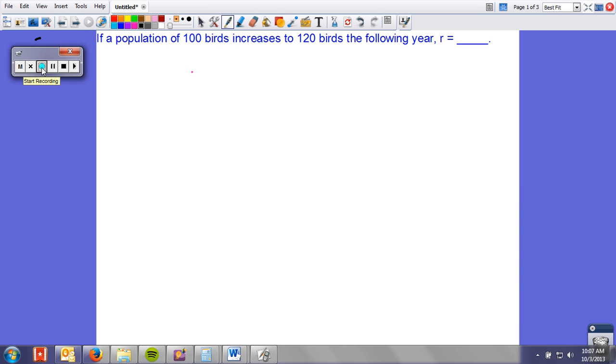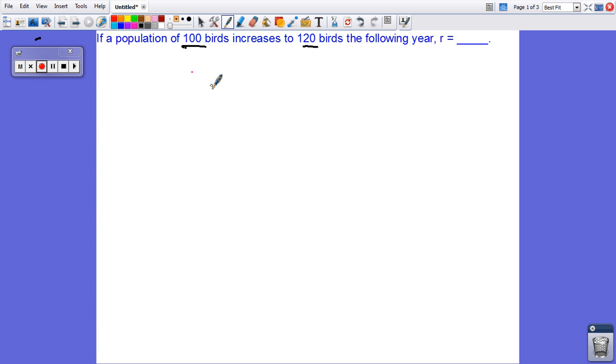We want to calculate R for this population. R is basically growth rate expressed as a decimal. It's just like calculating an increase in anything else. We're going to take the initial population and the final population. So take your final population minus your initial population divided by your initial population. In this case, it's going to be 20 over 100 or 0.2.